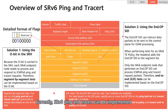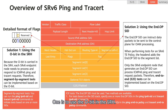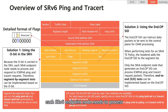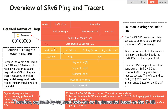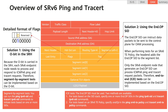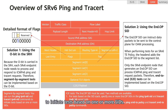SRV6 PIN and TRACERT can be implemented in either of the following ways. One is to use the O-bit in SRH. Because the O-bit is carried in SRH, each SRV6 endpoint node needs to process and respond to ICMPv6 PIN and TRACERT requests. Therefore, segment-by-segment tests can be implemented based on the O-bit. You can run the ping IPv6 SID and tracert IPv6 SID commands to initiate tests based on one or more SIDs.